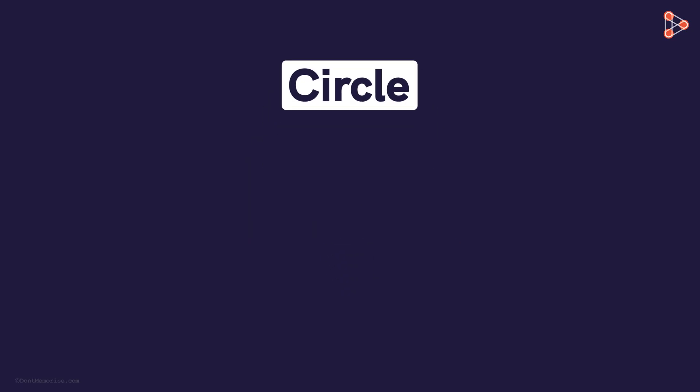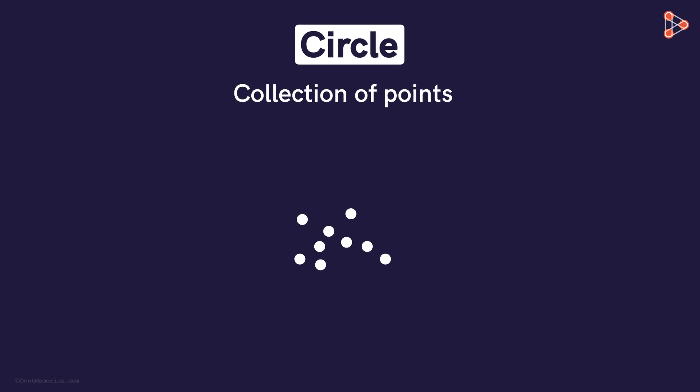A circle is nothing but a collection of points. But can randomly placed points form a circle? No, right? So can you tell me how the points come together to form a circle?